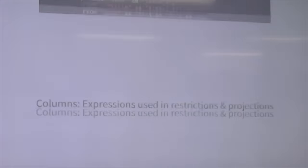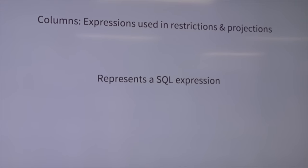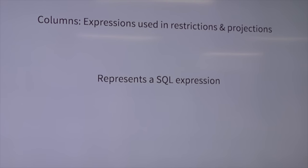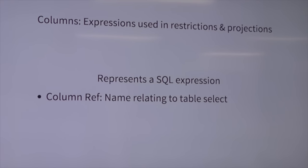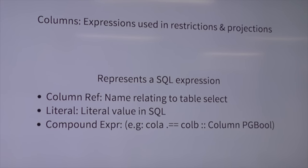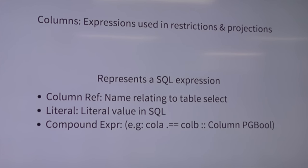So while it looks ugly, you probably shouldn't be concerned. We're touching on columns as the basic building block for generating SQL. A column represents a fragment of a SQL expression that you can use for either restricting or projecting in a query. You can't run a column because it's just a fragment, but you can use it to build other expressions. Column types include references to column names, literal values where you take a string or number and put a literal into the query, and compound expressions where Boolean operators take two columns and produce a new column with a type.